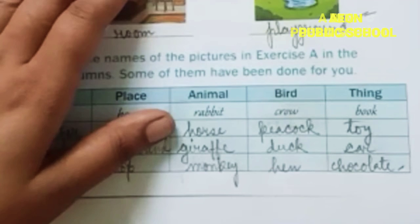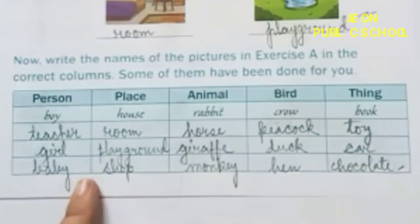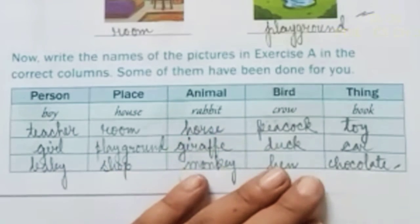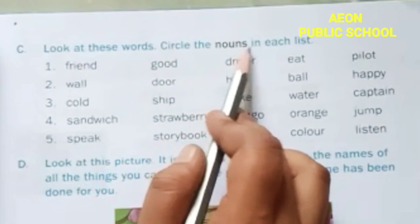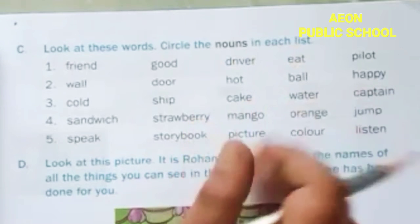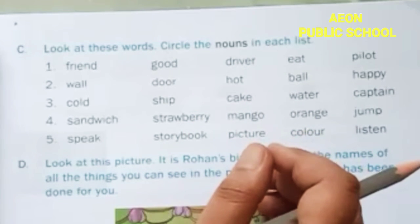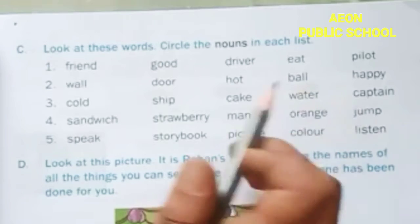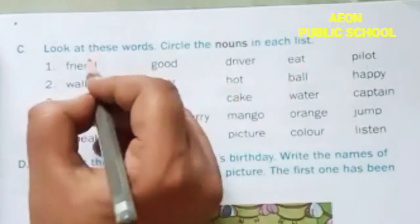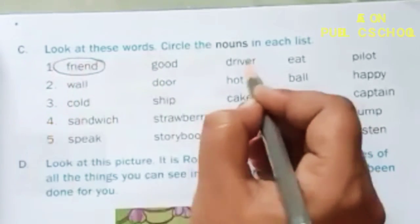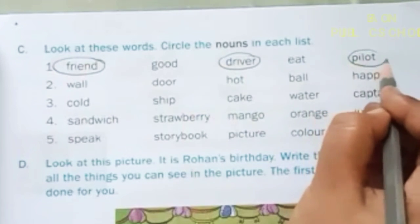From the previous pictures we divided them according to their columns. Now we go to the next question — question number C: look at these words and circle the nouns in each list. We can know that a noun is a naming word, so we can easily find them. From this list: train, goat, driver, eat, pilot — so train, goat, driver, pilot are the nouns.